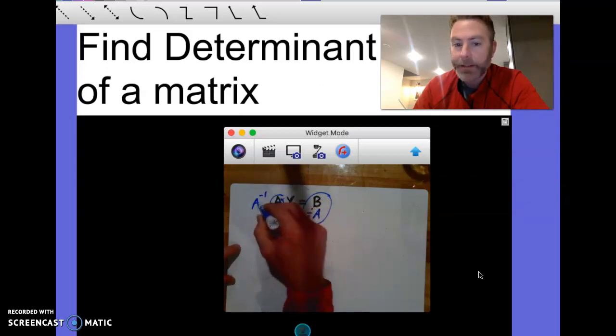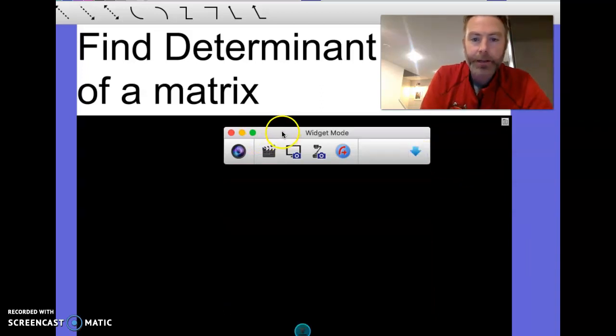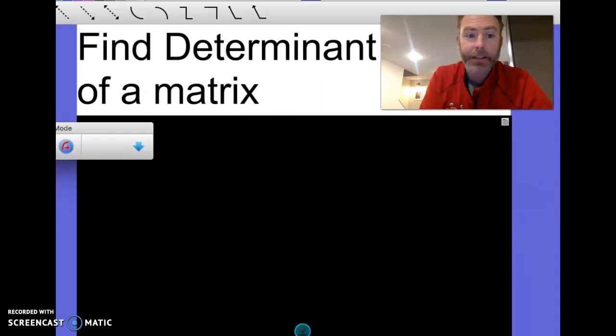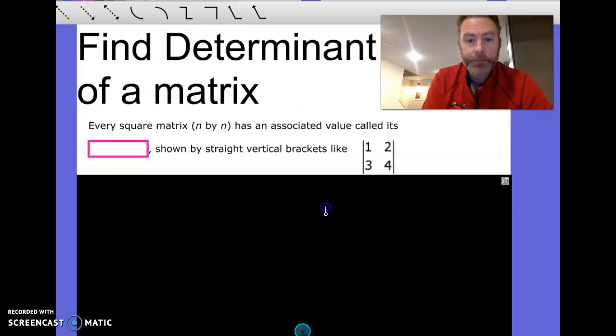And it has to do with something like this, it's called the inverse. In order to find this inverse, though, we have to have the determinant. So the determinant is a determining factor, I guess you could say, in finding the inverse of a matrix.